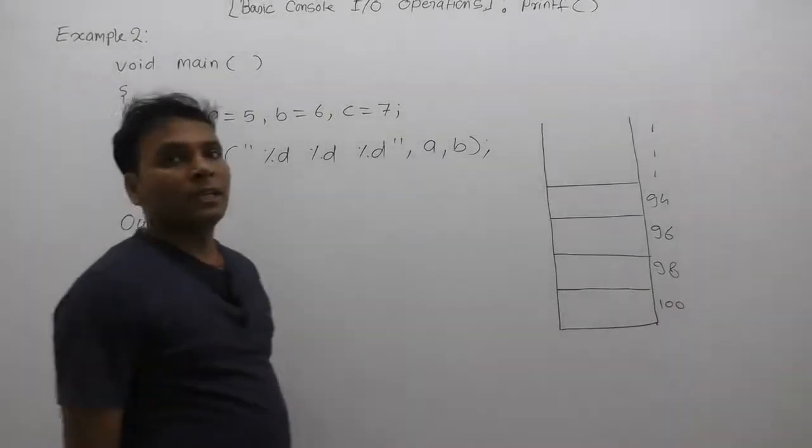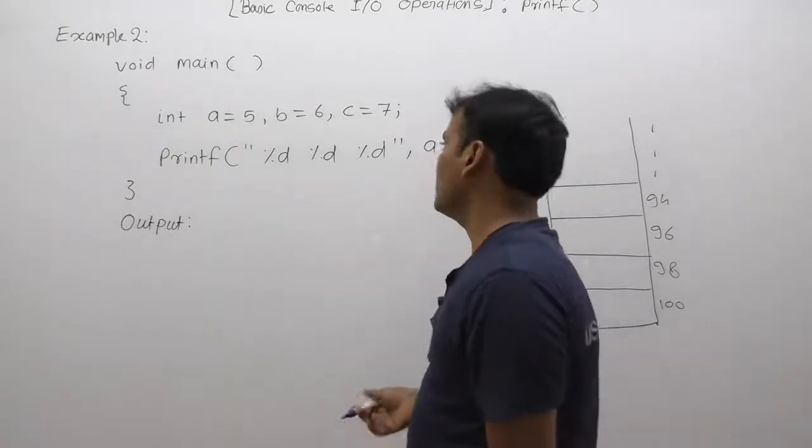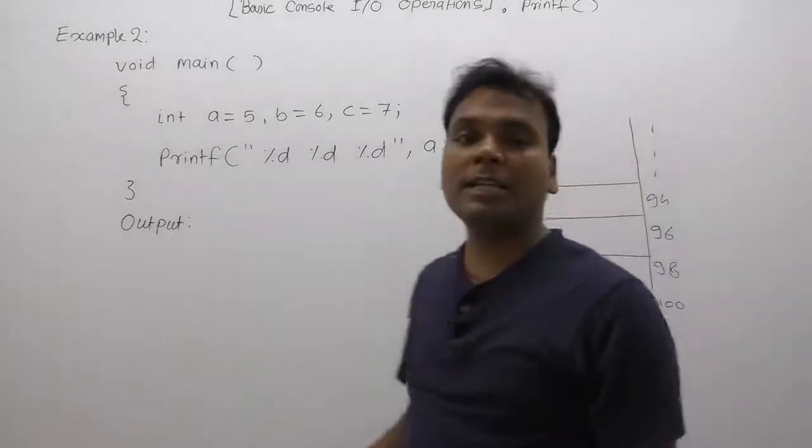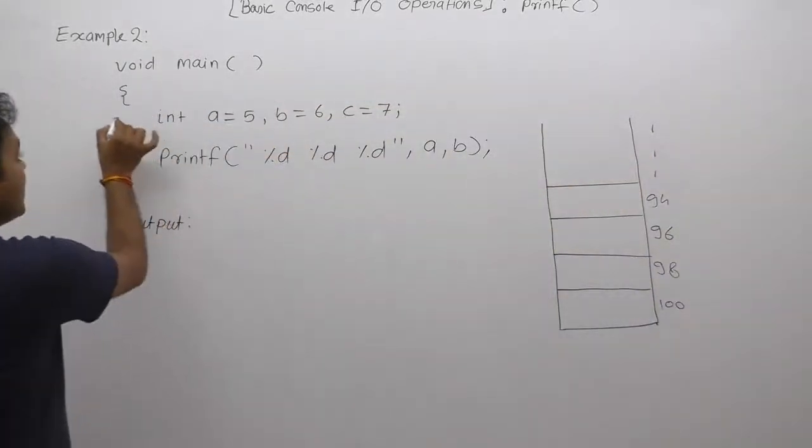Next example is almost the same as the previous example. In the previous example we were not supplying any value, but here we are supplying an extra parameter. What happens in that case? First of all, we are declaring three variables.